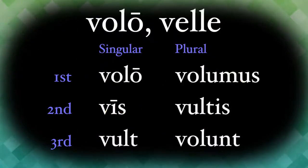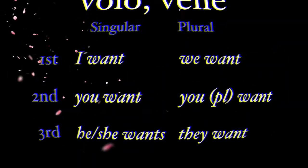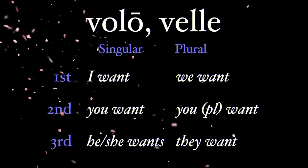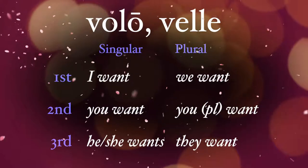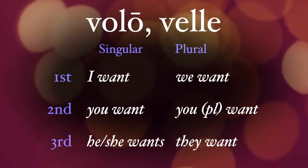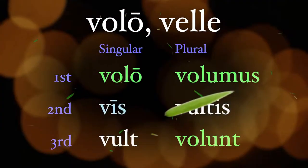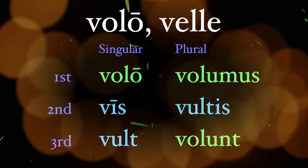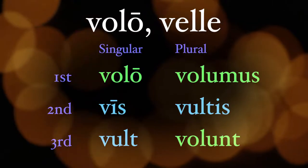Now for volo velle — here's the conjugation: I want, you want, he/she wants, we want, you all want, they want. Some forms begin with 'vo-' and some don't, and this pattern should be familiar to you — it's the same pattern from sum/esse.